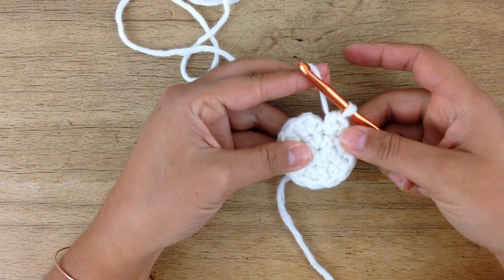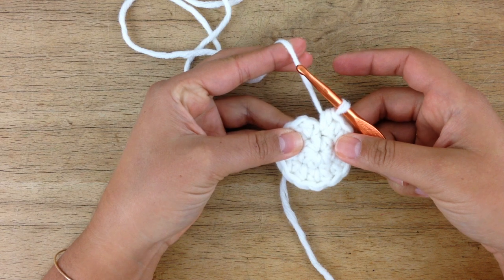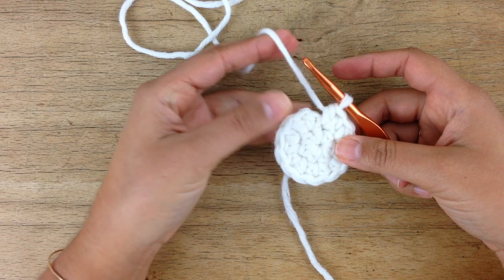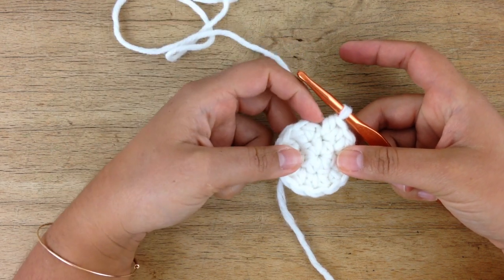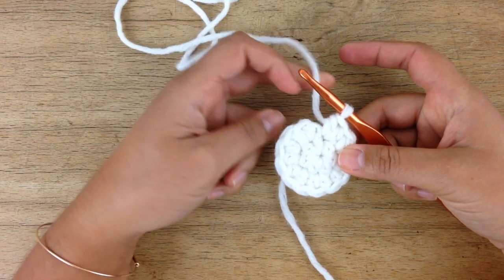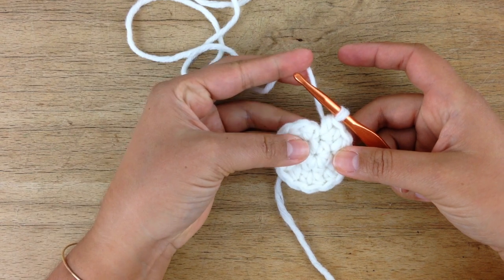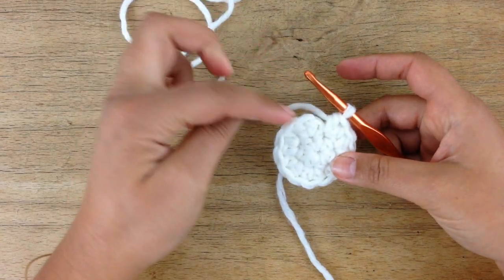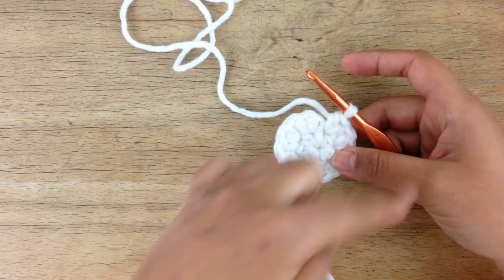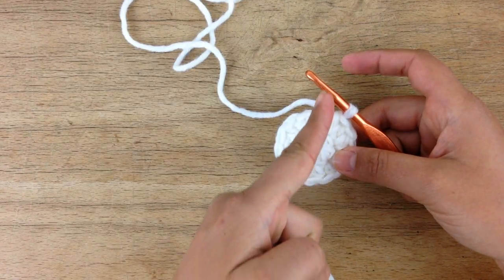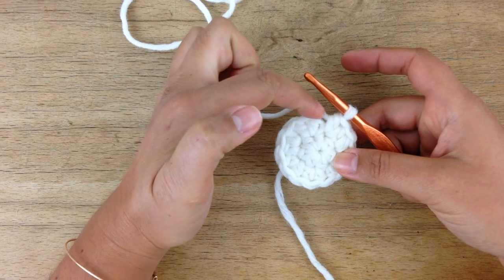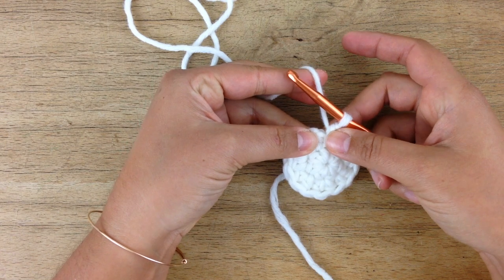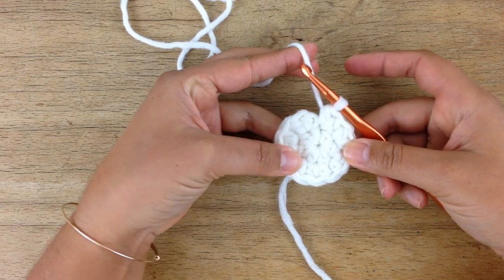I can either crochet in joined rounds, which means I would close this gap here with a slip stitch, which would ultimately lead to a seam in my work. Like if I would do that round after round after round, I would have a seam whenever I close the row with a slip stitch. The other way is I could work in continuous unjoined rounds, which eventually will lead to a spiral look.